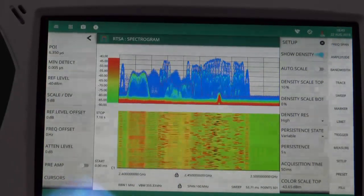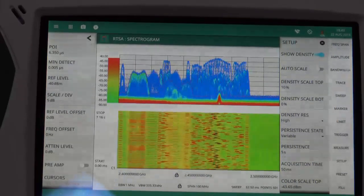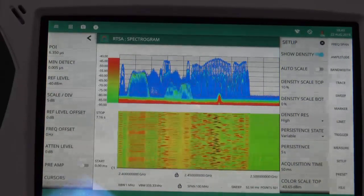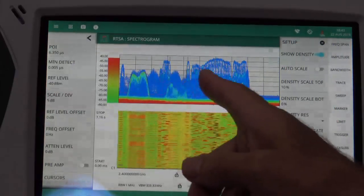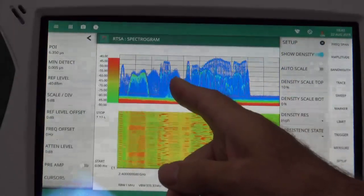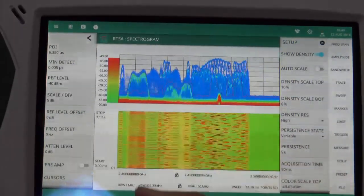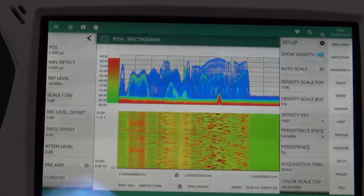I've now started streaming music again over Bluetooth from the smartphone to the audio speaker and we can see the Bluetooth signal at the top display here is avoiding the area where the wireless LAN is due to adaptive frequency hopping.